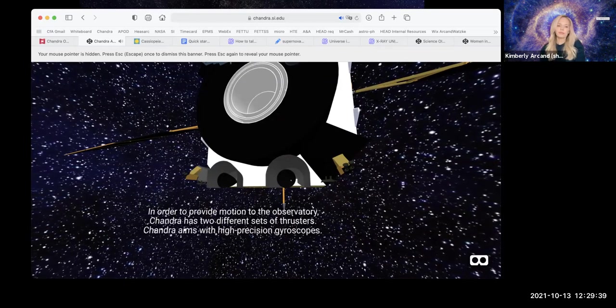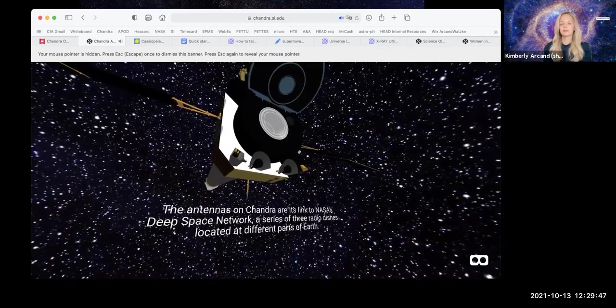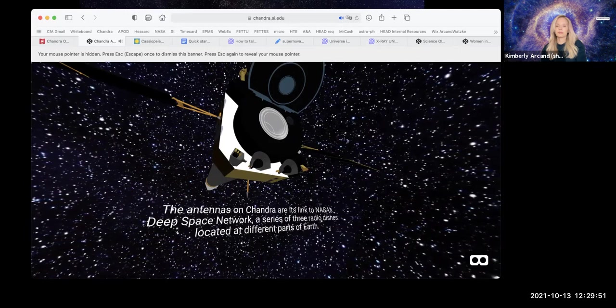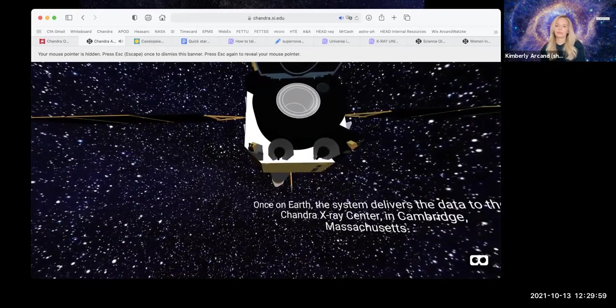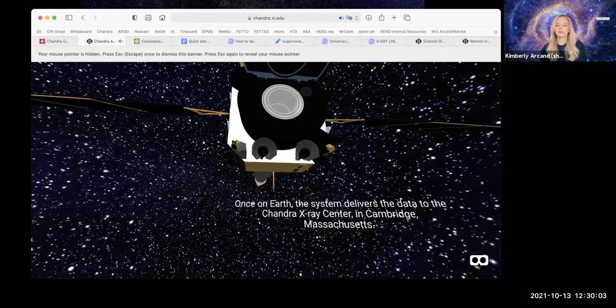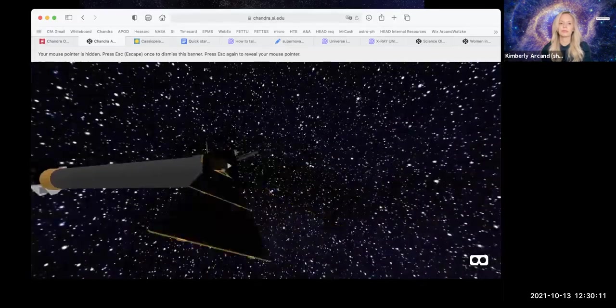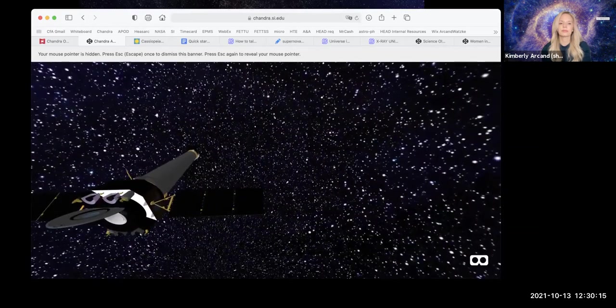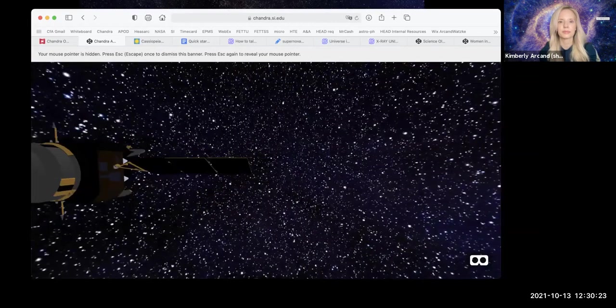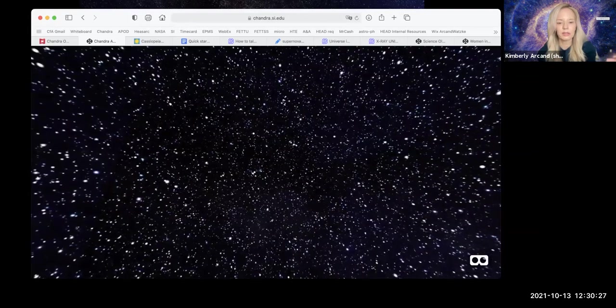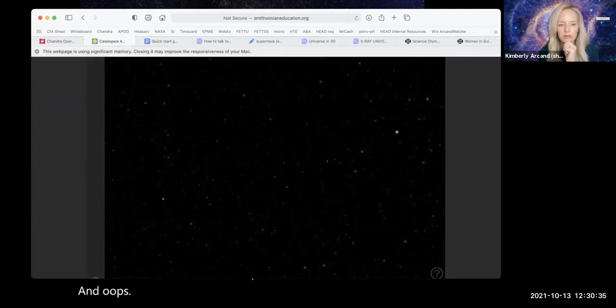Chandra's solar panels collect power for the telescope's detectors and its radio communication with the Earth. The electricity is also used to heat the mirrors to keep them from deforming in the cold temperatures of space. In order to provide motion to the observatory, Chandra has two different sets of thrusters. Chandra aims with high-precision gyroscopes. The antennas on Chandra are its link to NASA's Deep Space Network.